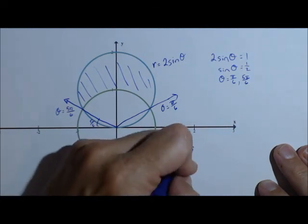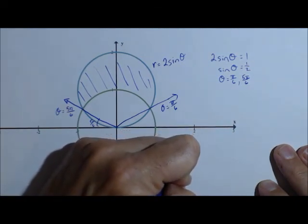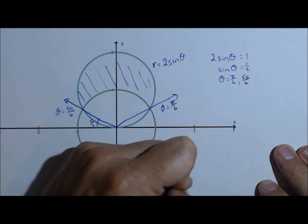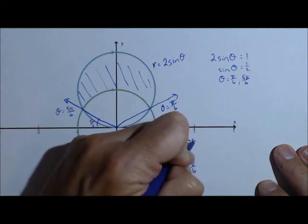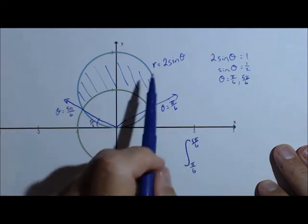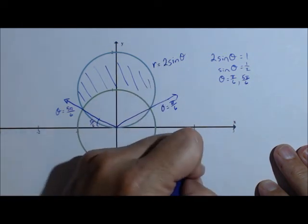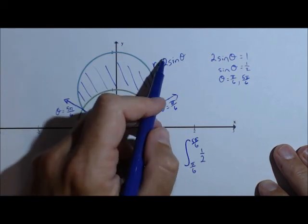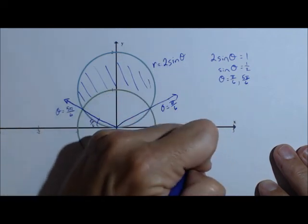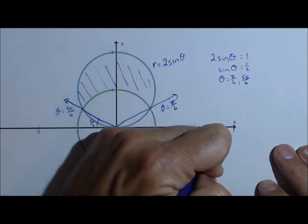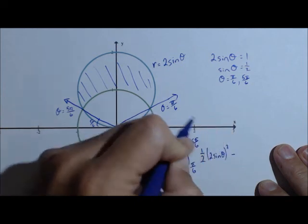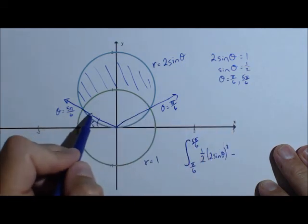Now let's go ahead and set up our definite integral. We're going from pi over 6 to 5 pi over 6. And remember that for area of a polar curve, it's 1 half times the radius squared. So 2 sine theta squared.